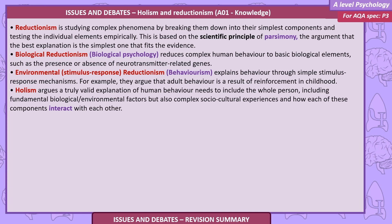Environmental stimulus-response reductionism, associated with behaviourism, explains behaviour through simple stimulus-response mechanisms — for example, arguing that adult behaviour is a result of reinforcement in childhood. Holism argues that a truly valid explanation of human behaviour needs to include the whole person, including fundamental biological and environmental factors, but also complex socio-cultural experiences and how each of these components interact with each other.